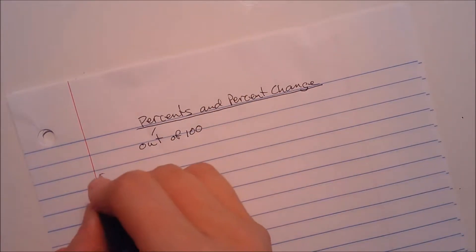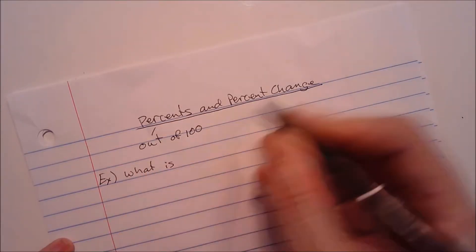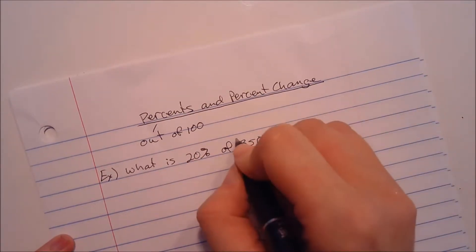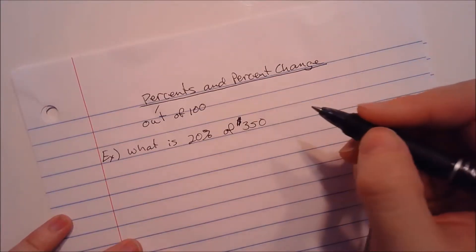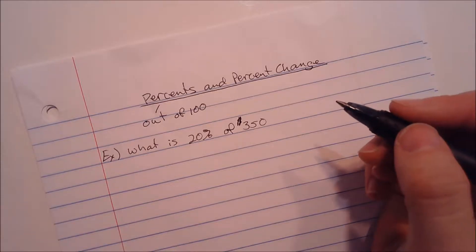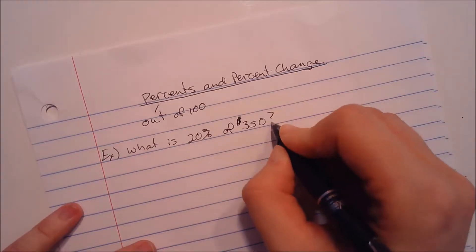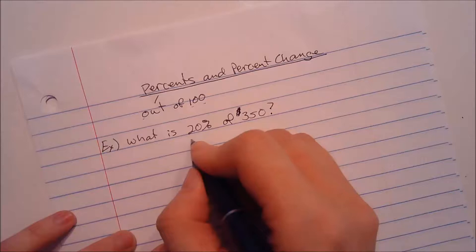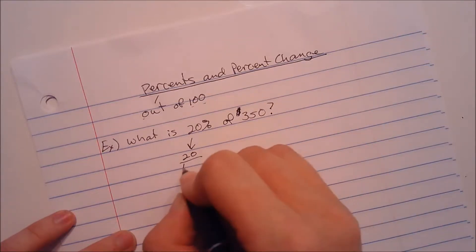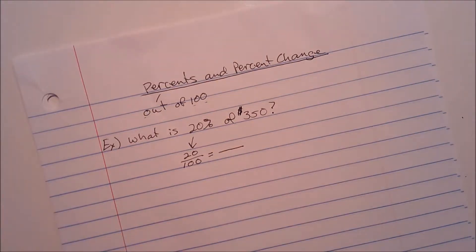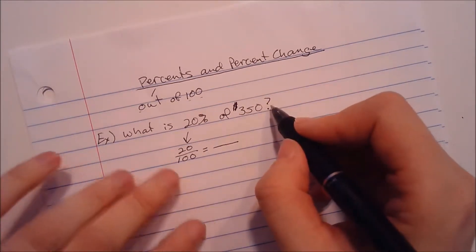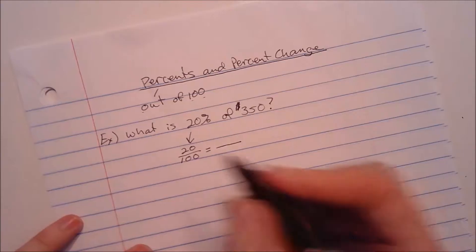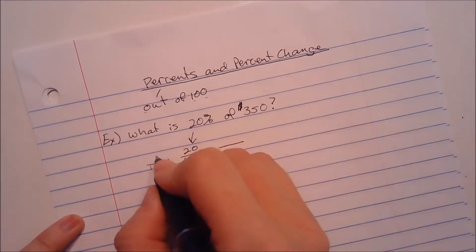When you see something, for instance, like what is 20% of 350, maybe that's like a price of an item, $350 even, then you can set that up by thinking of 20% as just 20 out of 100. You're going to take your percent, make it 20 out of 100, and then you're going to set up a proportion. This is the total, that's out of 100 total, and this is the part.